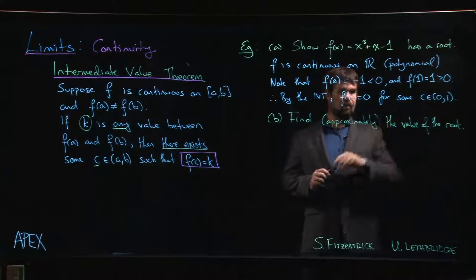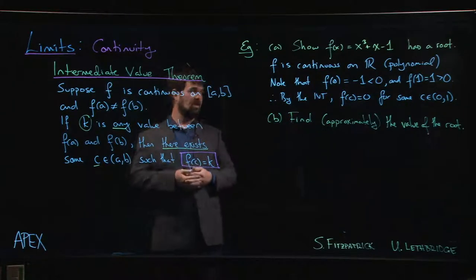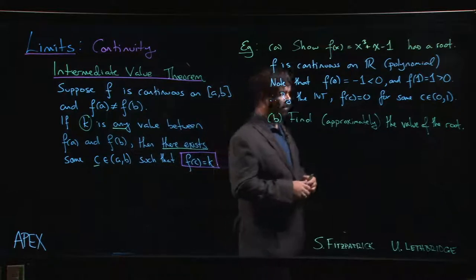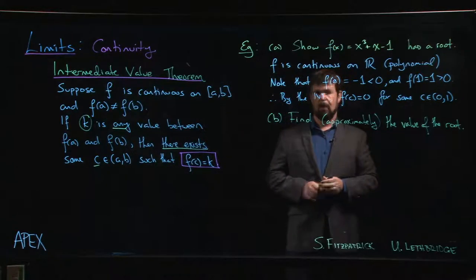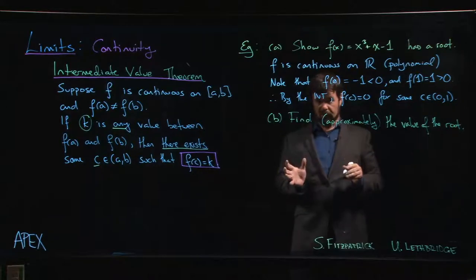So for now it's enough that we've found at least one interval which must contain a root using the intermediate value theorem. But maybe you're not satisfied with that. It's somewhere between zero and one. That's maybe not a great approximation for the root.